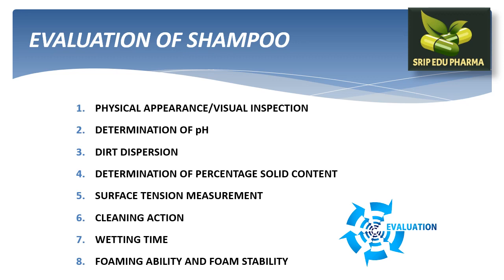These are the different parameters used for evaluation of shampoo: 1. Physical appearance, 2. Determination of pH, 3. Dirt dispersion, 4. Determination of percentage of solid content, 5. Surface tension measurement, 6. Cleaning action, 7. Wetting time, 8. Foaming ability and foam stability.